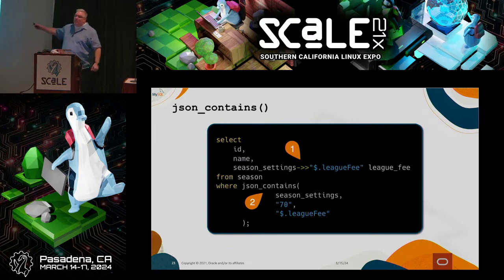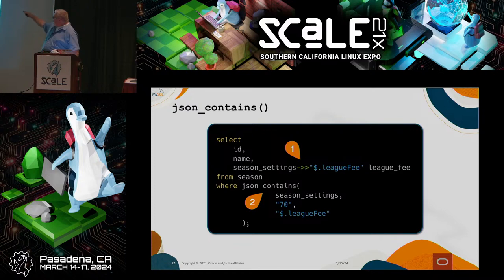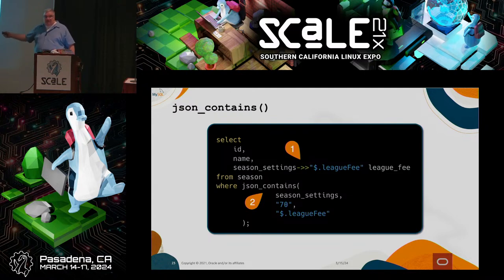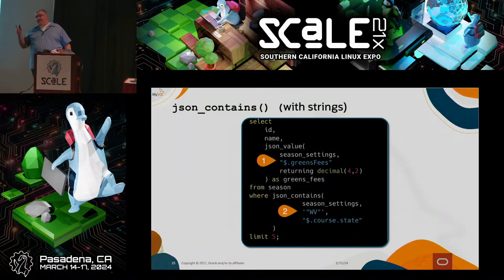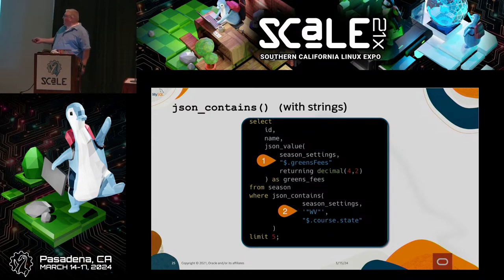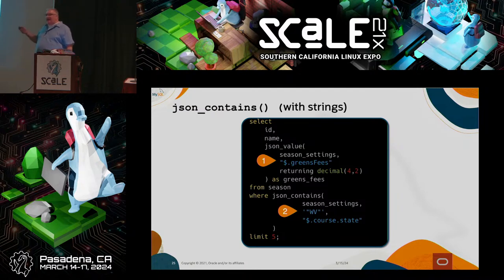One method we can use is JSON_CONTAINS, which takes three arguments: the first is the column, the second is the value we're looking for, and the third is the path to that property. So we can get the ID, name, and league fee from season where the season_settings column has a property named league_fee that equals 70. It works great with numbers and booleans, but not great with strings — because with JSON_CONTAINS, if we want a string, we have to wrap it in quotes with single tick, double tick, WV, double tick, single tick.